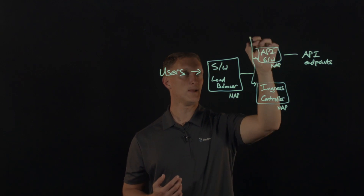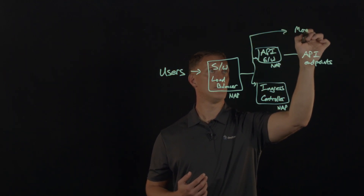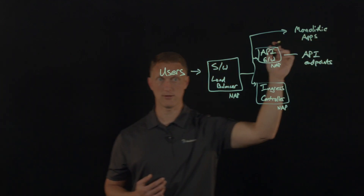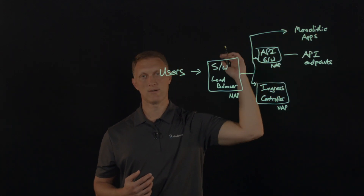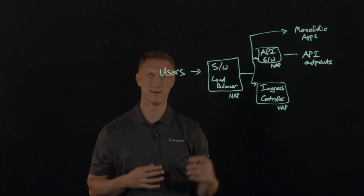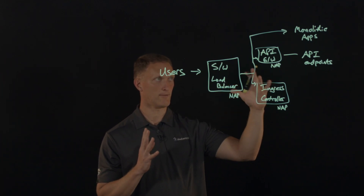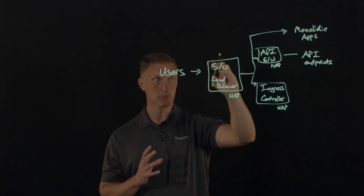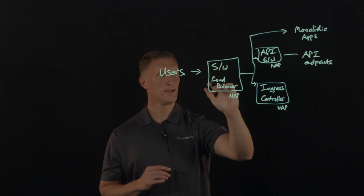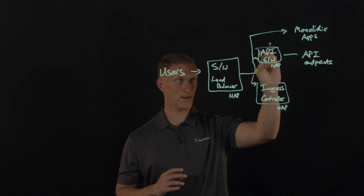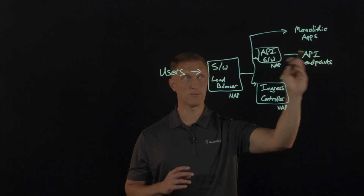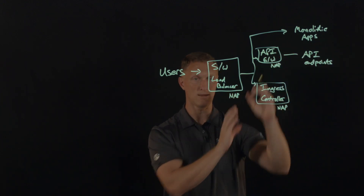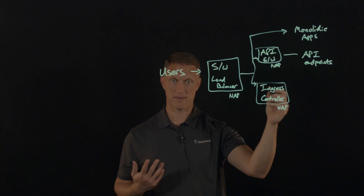You may also have monolithic apps up here as a representation — apps running on classic hardware in a classic implementation. You may have to protect those monolithic apps back on the software load balancer with NGINX App Protect loaded there. But if you have an API gateway leading to API endpoints, you can start to move the NGINX App Protect web application firewall closer to those endpoints.